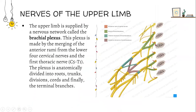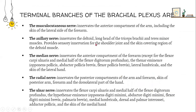Nerves of the upper limb. The upper limb is supplied by a nerve network called the brachial plexus. This plexus is made by the merging of the anterior rami from the lower four cervical nerves and the first thoracic nerve. The plexus is anatomically divided into roots, trunks, divisions, cords, and finally the terminal branches. Terminal branches of the brachial plexus are the musculocutaneous nerve, the axillary nerve, the median nerve, the radial nerve, and the ulnar nerve.